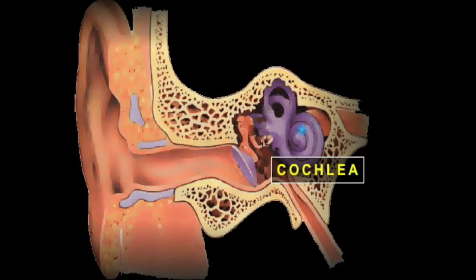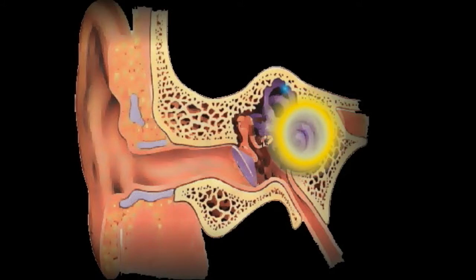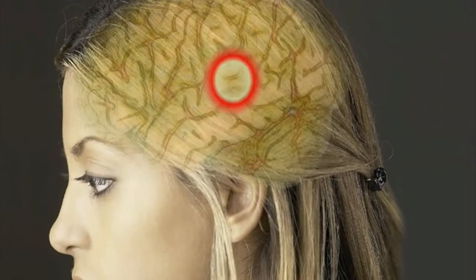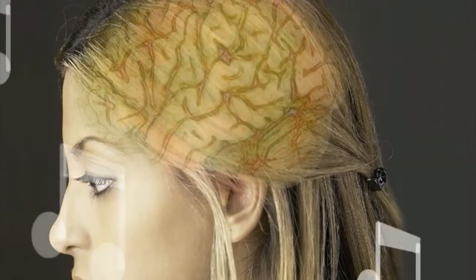Once the sound waves reach the inner ear, they are converted by tiny hairs into electrical impulses, which the auditory nerve sends to the brain. The brain then translates these electrical impulses as sound.